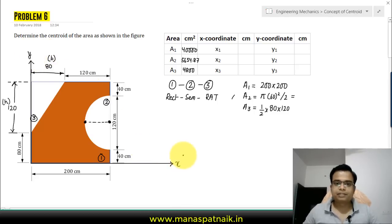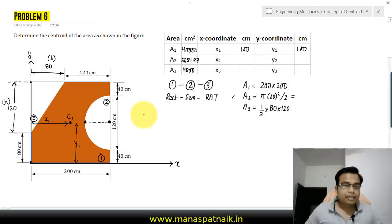First, let's get the values of x coordinate for the rectangle. This distance is x1 and this distance is y1. x1 is half of 200, that is 100. And y1 is half of 200, which is 100. So 100 comma 100.